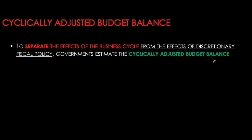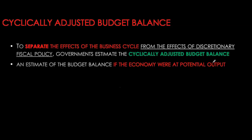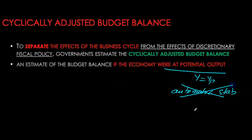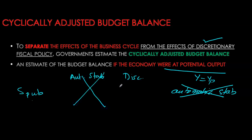The cyclically adjusted budget balance takes this distinction into account. It is simply the budget balance that assumes the economy is at potential, so the role of automatic stabilizers is nullified. Cyclically adjusted budget balance focuses only on the effect of discretionary measures on public savings, removing the business cycle effect. It is typically less volatile than the actual budget balance.